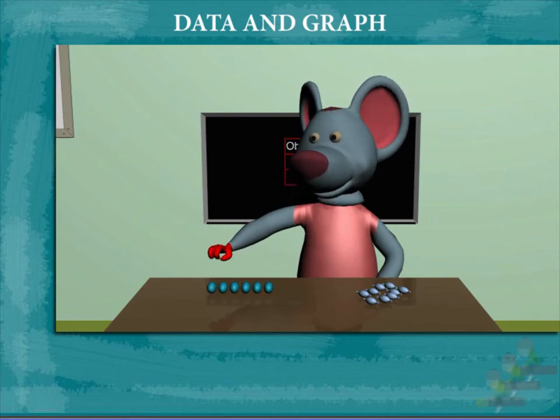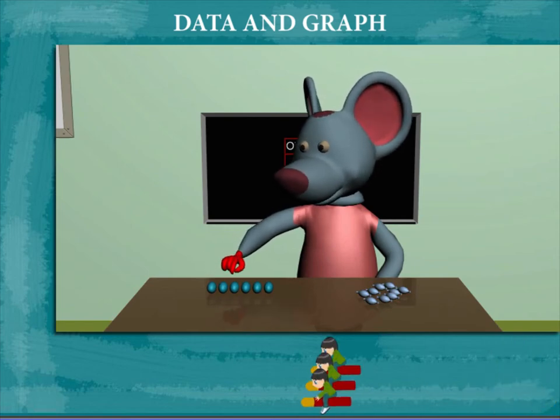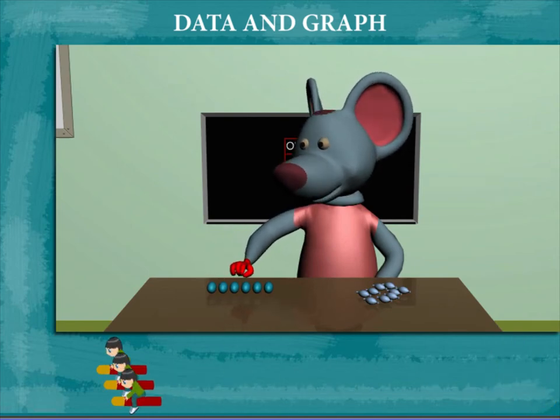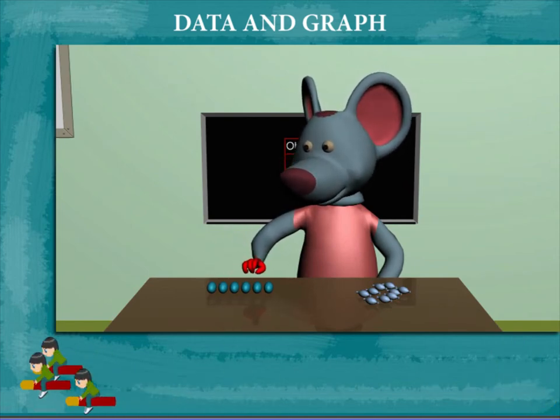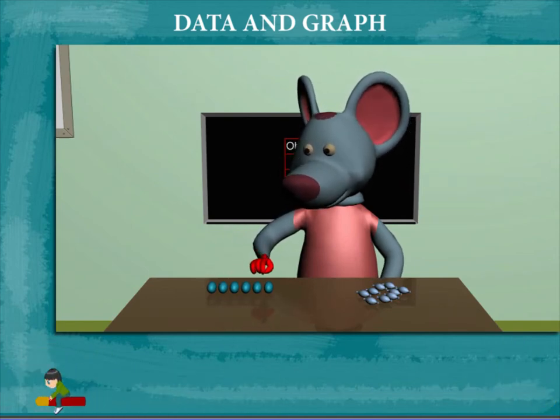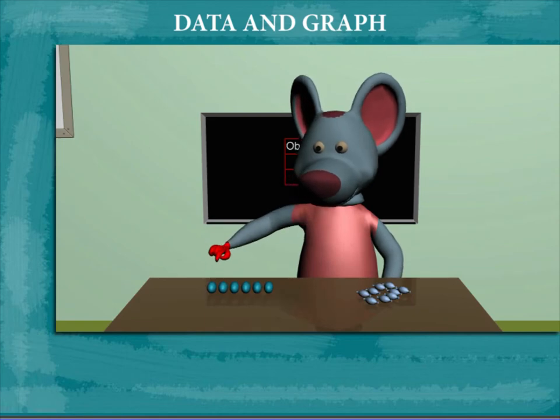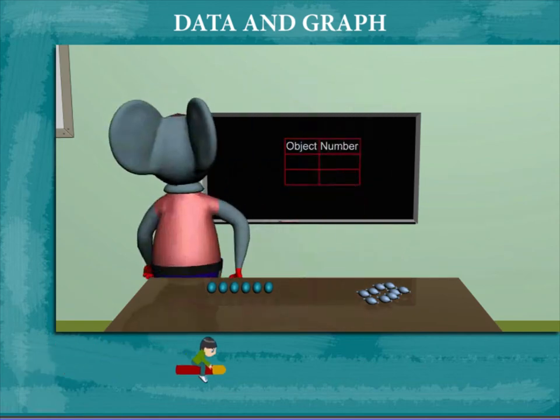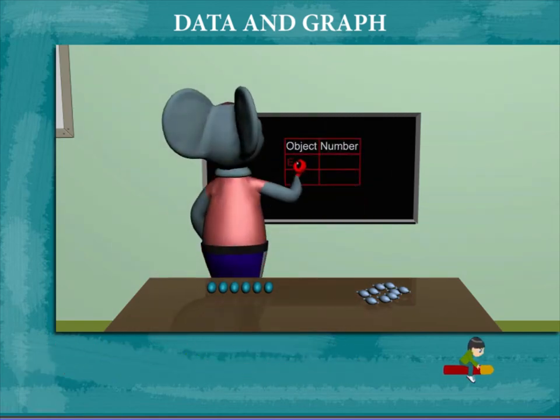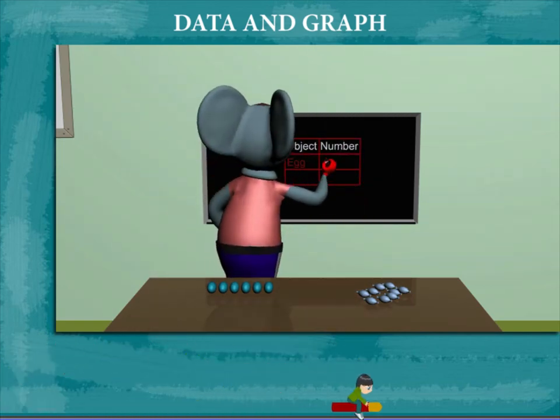He counts: 1, 2, 3, 4, 5 and 6. So the object is eggs and their number is 6.